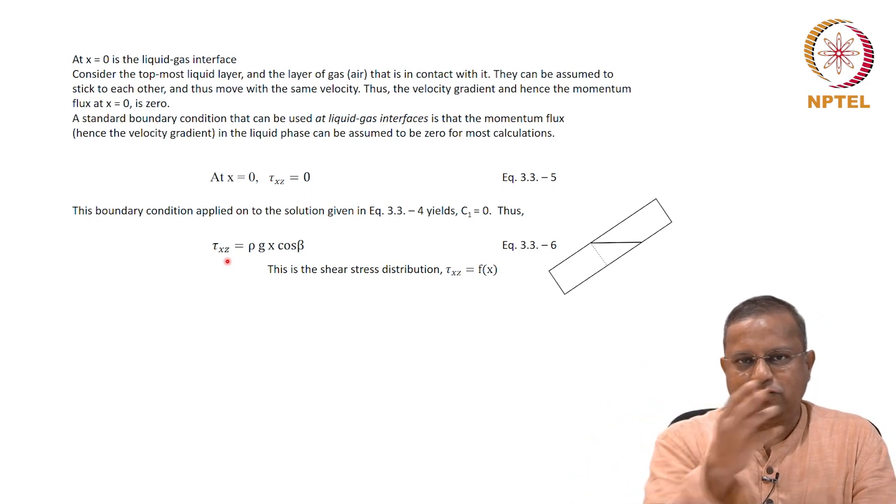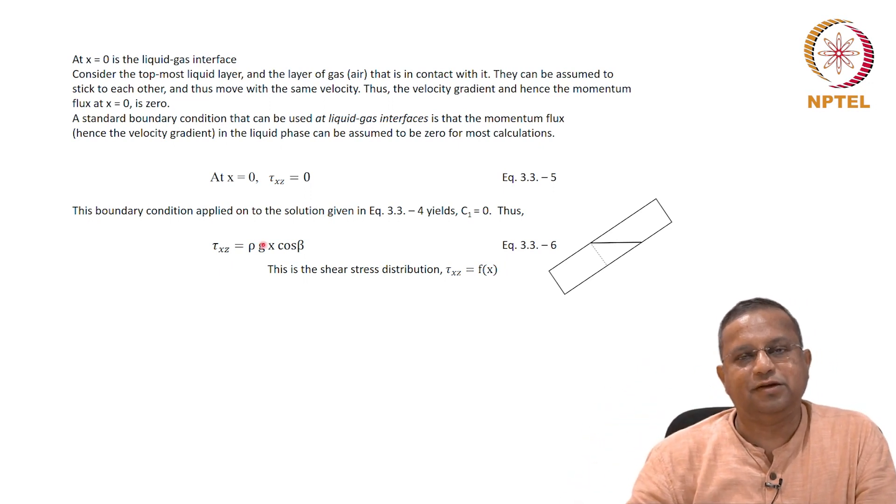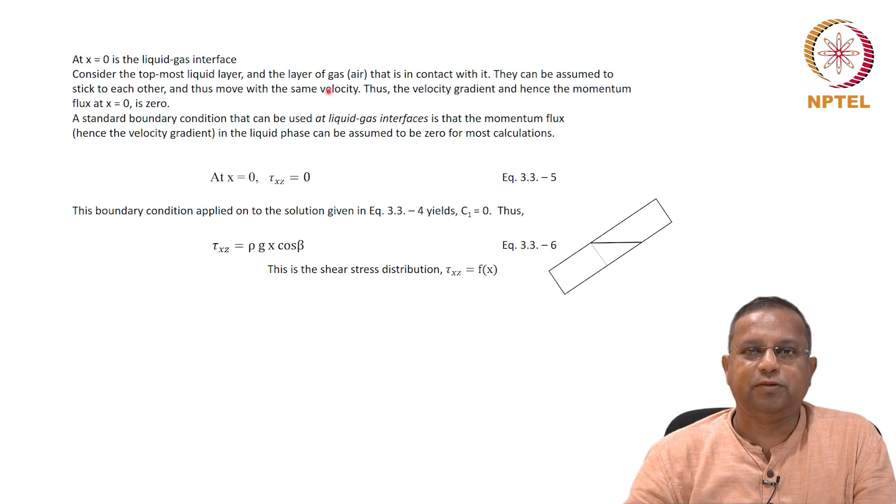We looked at contributions of momentum flux through molecular or viscous means and also through convective means. We put the various terms into the momentum balance equation and arrived at tau xz equals rho g x cos beta, which is a linear variation along the x direction. It goes from zero value to a maximum value, giving us the shear stress distribution in this particular situation.